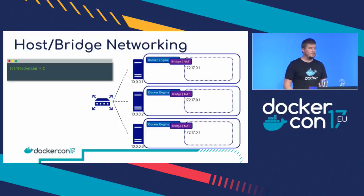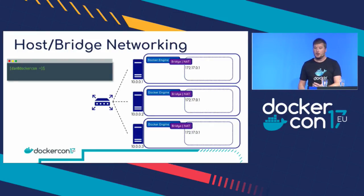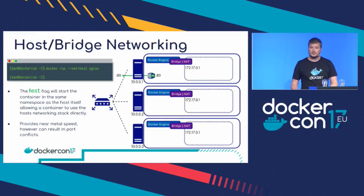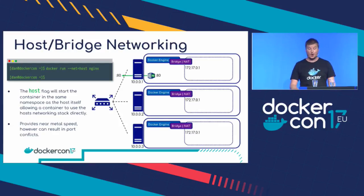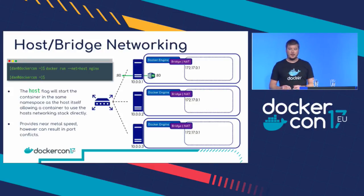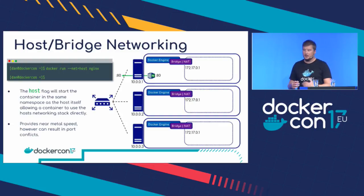The first two networking types we'll look at are host and bridge networking — the simplest networks that come out of the box. Host networking is quite simple: when you create a container and connect it to the host network, you are connecting it to the host's network. The process in the container attaches its exposed ports to the host's network stack — it shares a TCP/IP stack and the host's namespace. The only real difference is the segregation of running it in a container.